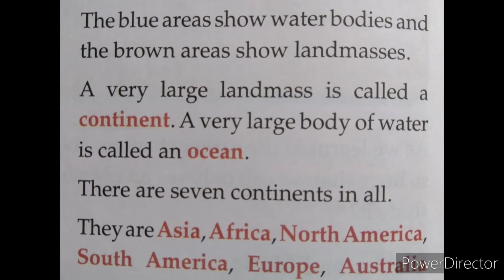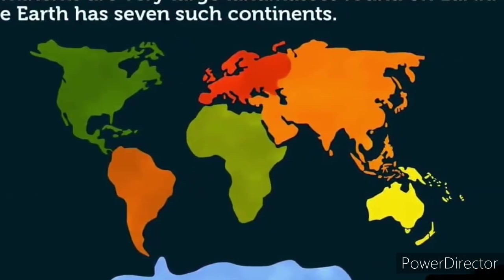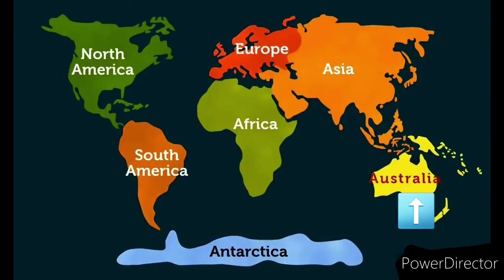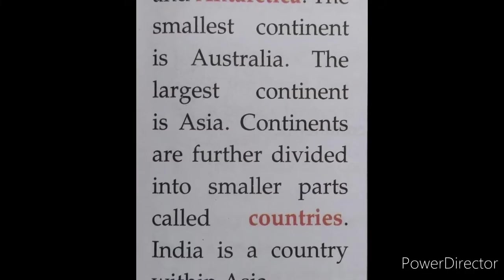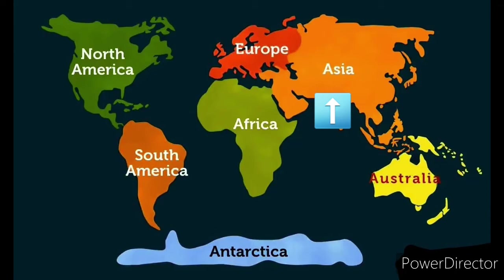There are seven continents in all. They are Asia, Africa, North America, South America, Europe, Australia, and Antarctica. The smallest continent is Australia — you can see it below on the right side of the map, it is the smallest continent of all. The largest continent is Asia, which you can see above on the map.